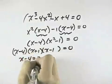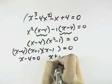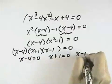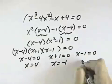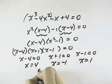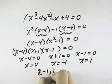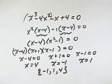So that means I have three factors, and I can set them each equal to 0 and solve. By adding 4, I get x equals 4. By subtracting 1, I get x equals negative 1. And by adding 1, I get x equals positive 1. So negative 1, 1, and 4 are my three solutions.